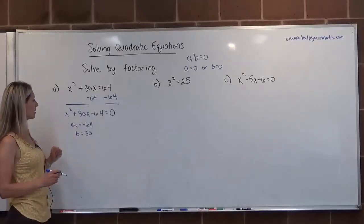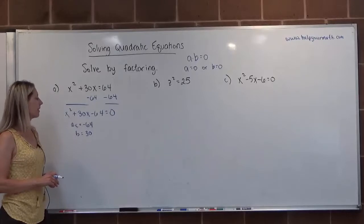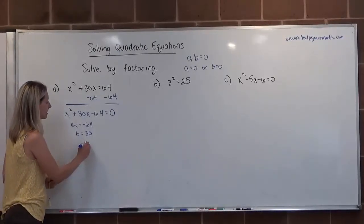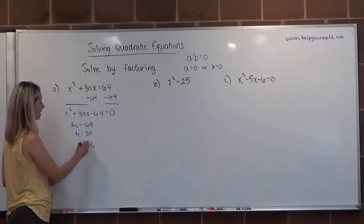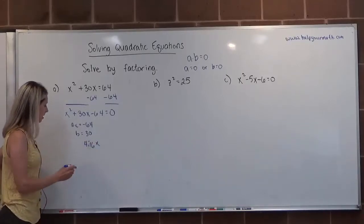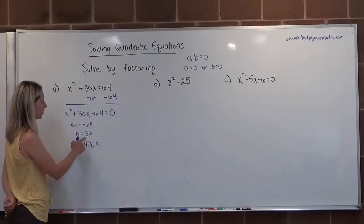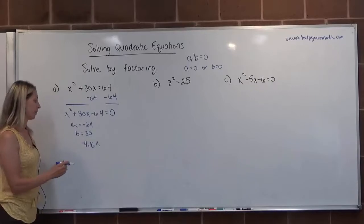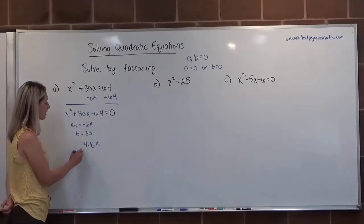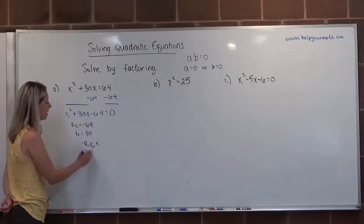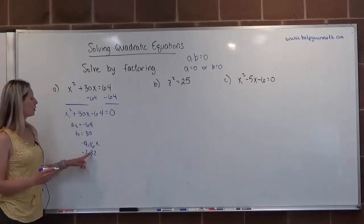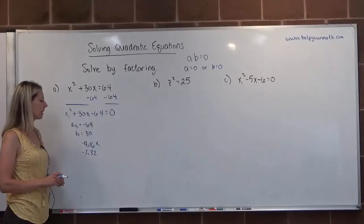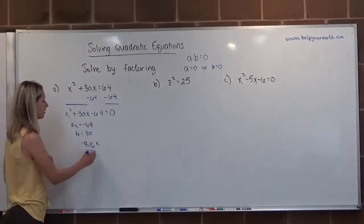Since the leading coefficient a is equal to 1, we're looking for two numbers that multiply to negative 64 that add up to 30. Let's see, things that multiply to 64, 4 and 16 where 16 is negative, that's not going to work. How about negative 4 and 16? That would be positive 12. Still doesn't work. So next, let's try negative 2 and 32. We multiply these, they total to negative 64. We add them up, and they add up to positive 30. There's our winning combination.